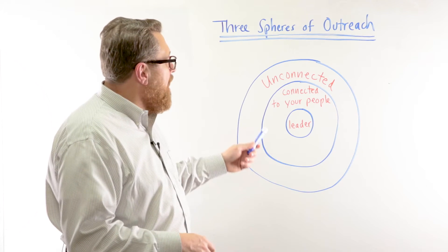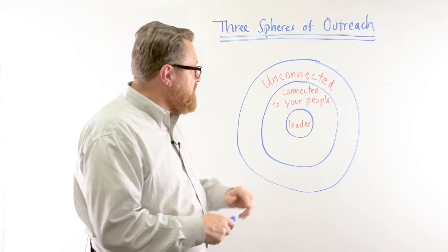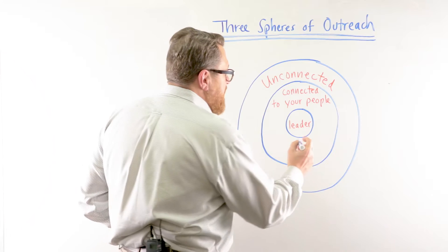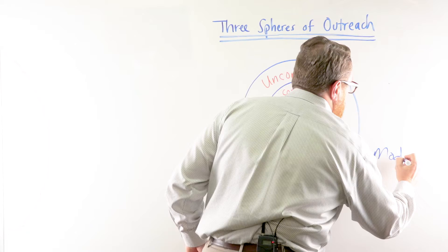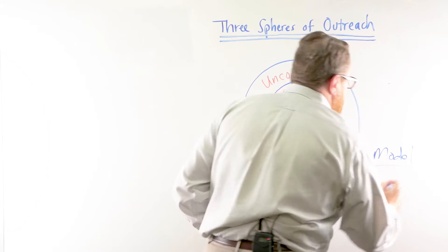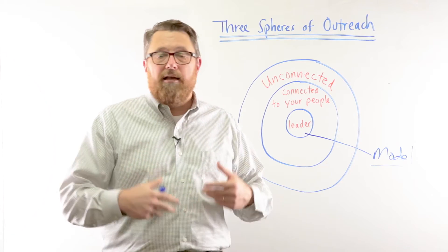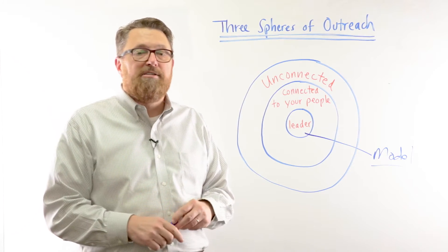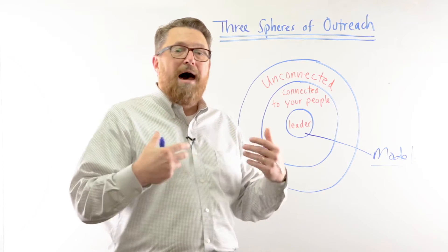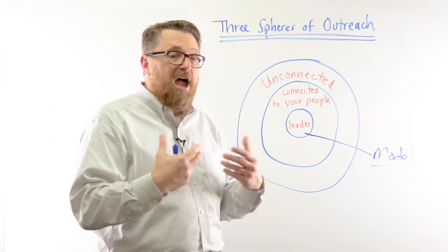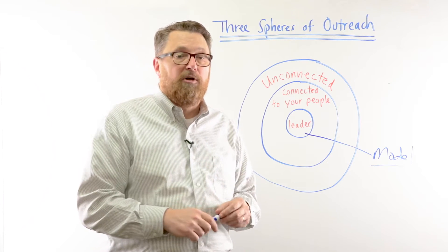So the key thing is: what are the strategies that go along in each one of these spheres? The first strategy for the leader is that the leader needs to learn how to model evangelism. They need to learn how to build relationships, how to get into spiritual conversations, how to interact with leaders within the community. They have to figure out how much time they're going to spend in outreach to their community.